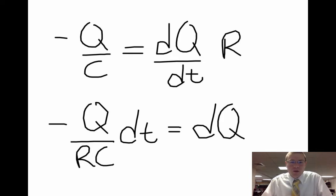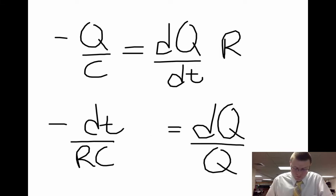I've got dQ separated, but I need to move that Q over to the other side. So all I'm going to have to do is divide by the Q, and there we go. We've separated all our Q's and dQ's on one side, and we put everything on the other side.